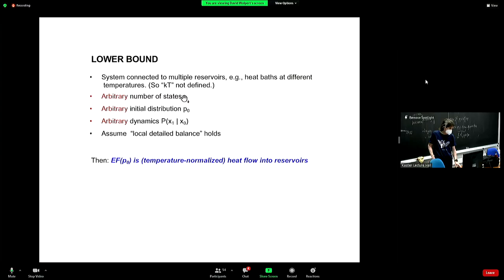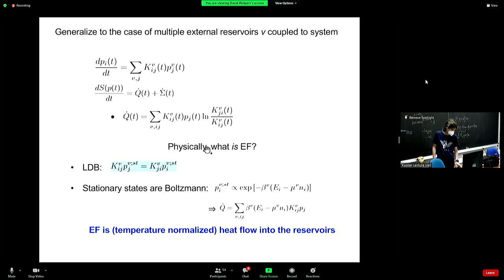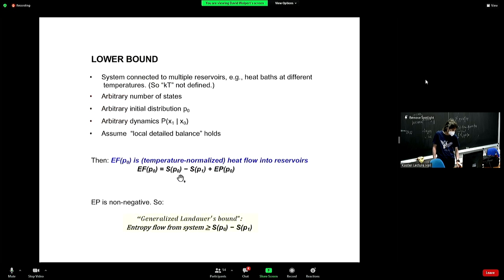So now let's return to the lower bound, which was just Landauer's bound, in the case of a single reservoir, temperature KT and just two states. But now we can talk about multiple reservoirs. And let's just say that KT is not even defined. So as soon as you're talking about multiple reservoirs, we can't even talk about something like, oh, bit erasure is KT log 2. There's no T. There's multiple reservoirs. Let's kick it up. Allow an arbitrary number of states, arbitrary initial distribution, arbitrary dynamics, P of ending state given starting state. Let's assume that local detail balance does hold. Then the entropy flow is, as we just saw here, temperature normalized heat flow into the reservoirs. EP is non-negative. So therefore, we get the generalized Landauer's bound, that the temperature normalized heat flow into the reservoirs is greater than or equal to the drop of entropy, where you can't have any KTs around because you don't even have a single T. And this is, you'll see that phrase generalized Landauer's bound often in the literature referring to this result.